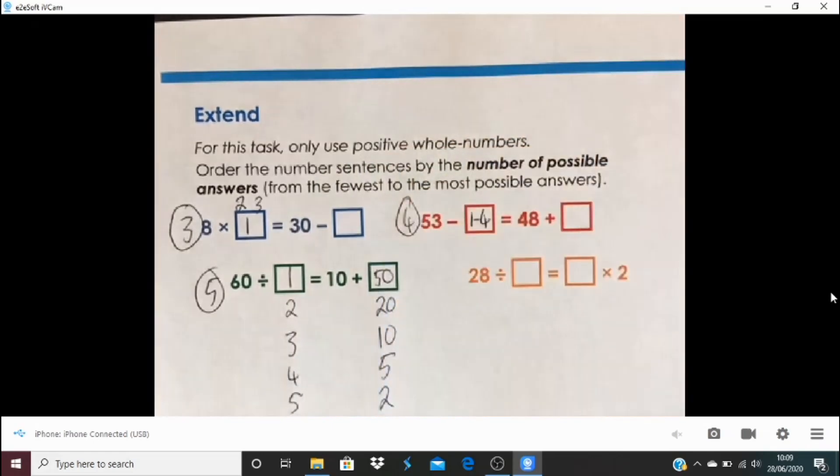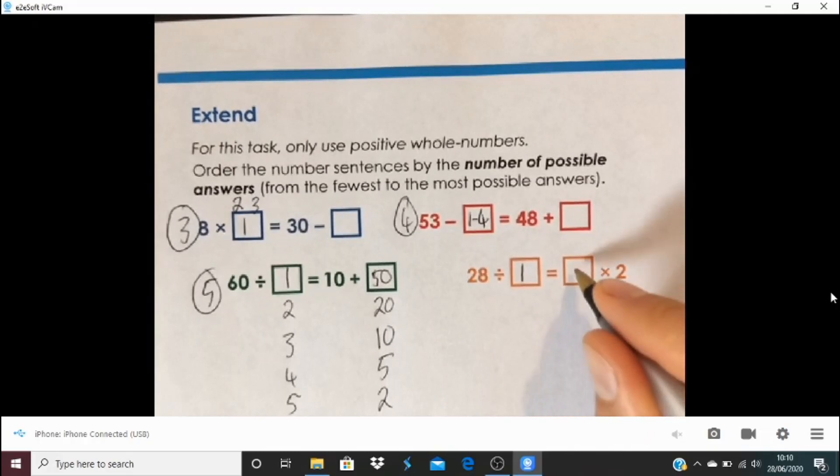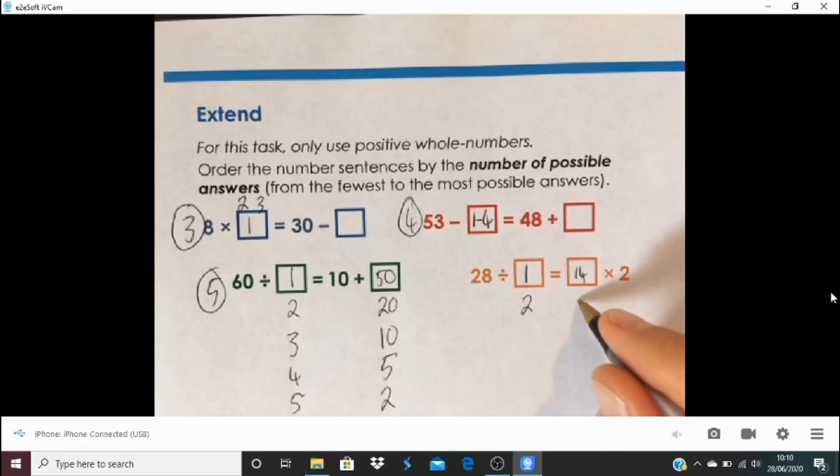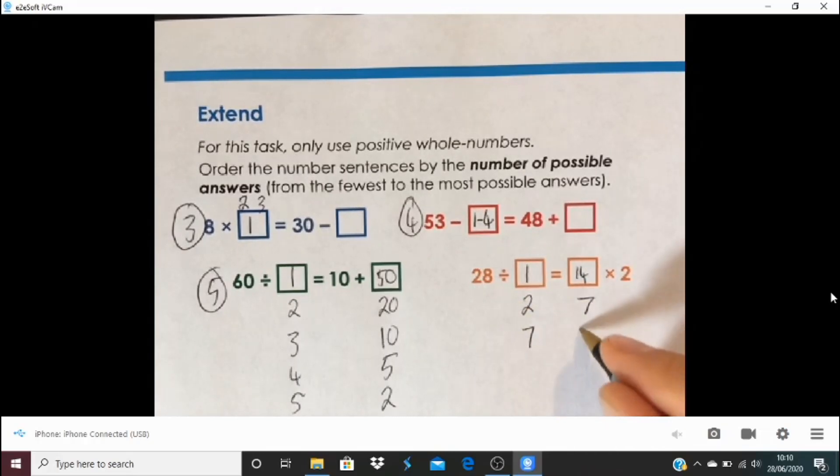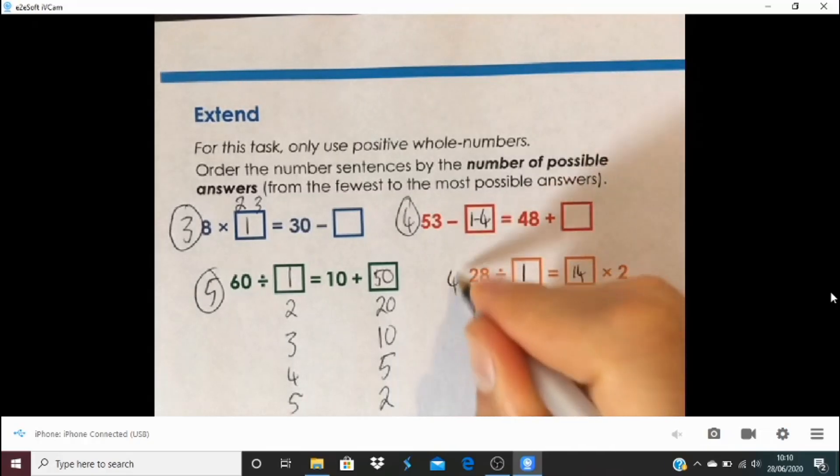Should have written down 4 ways on that one. And then let's have a look at this one: 28 divided by equals something multiplied by 2. So it could be 28 divided by 1, that's 28, and so that would have to be 14 there. 28 divided by 2 equals 14, so that would be 7 times 2. And 28 divided by 7 will give me 4, which I can make with 2 times 2. And I could actually do 28 divided by 14, that will give me 2, I can make that by doing 1 times 2. So how many answers in this example here? I have once again 4.